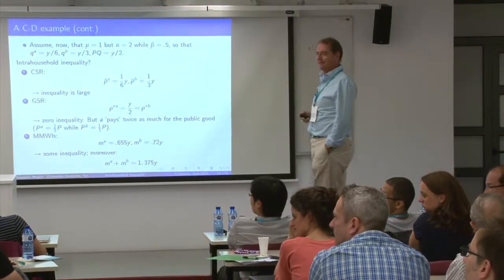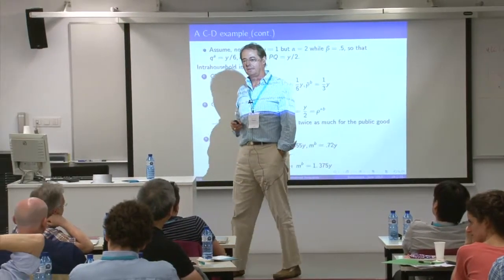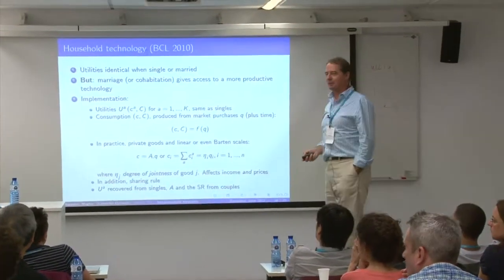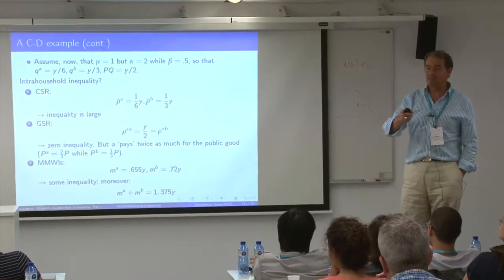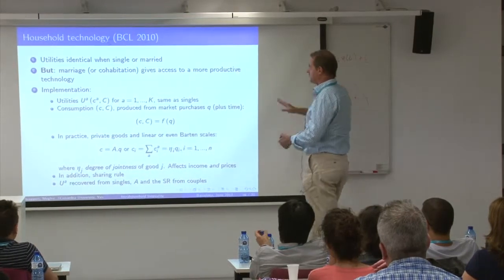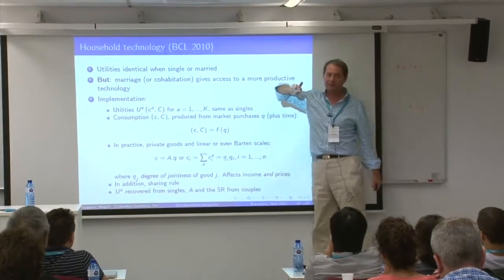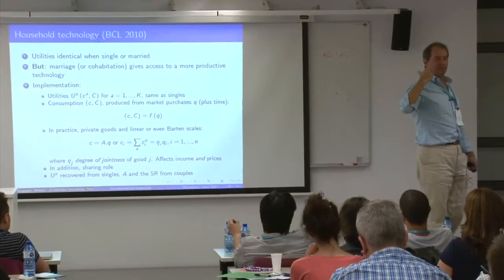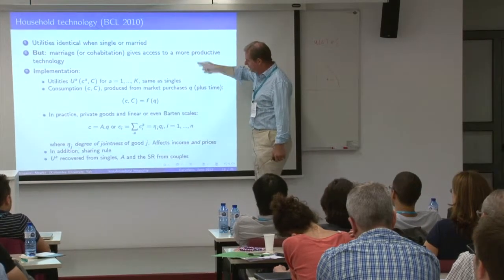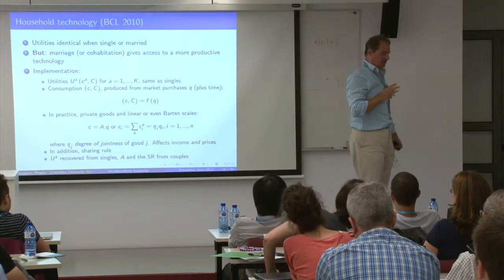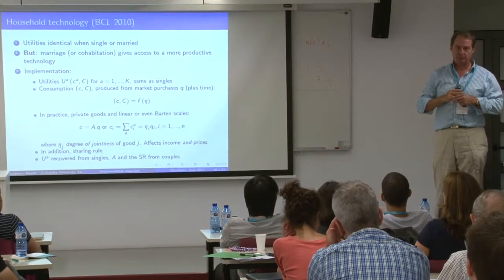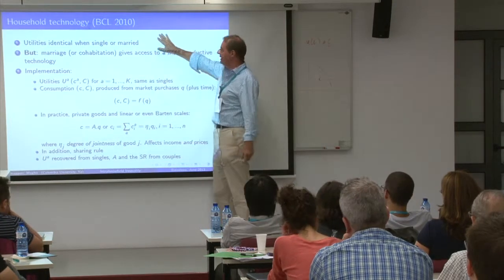Now let's talk about identification. We observe allocations, we don't see parameters. I distinguish pure identification in the collective model for singles and couples, and what additional mileage you get by linking preferences when single with preferences when married. Pure identification: assume you observe a demand function — aggregate demand at the household level as a function of prices and income — but you don't observe who is consuming what within the household. Can I recover preferences and the sharing rule?